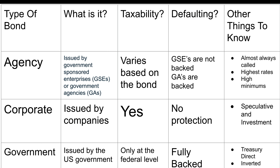Treasuries are sold direct to consumer on TreasuryDirect, which is the government's website, or you can buy them on your brokerage. At this point in time, it's important to know that rates are inverted, meaning that longer-term bonds — 20 or 30 years — actually have lower rates than Treasury bills and notes, which is not usually how it is, but that's how it is right now. So if you're looking into buying these, keep in mind that yes, you're locking in that rate for a longer time, but you will be receiving a lower rate.